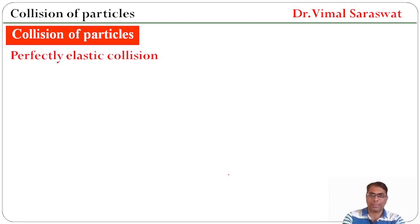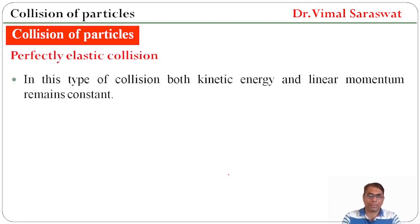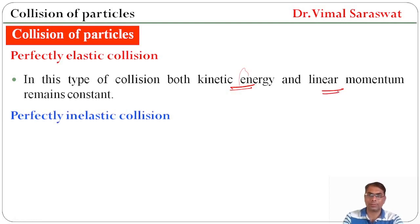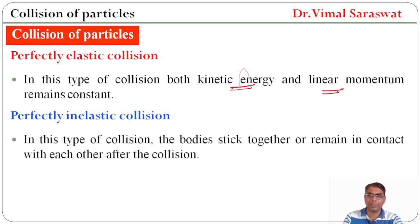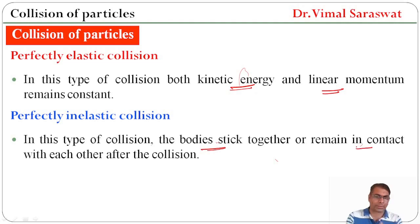First type is perfectly elastic collision. In this type of collision, both kinetic energy and linear momentum remain constant. The second type of collision is perfectly inelastic collision. In this type of collision, the bodies stick together or remain in contact with each other after the collision. Kinetic energy does not remain constant, whereas linear momentum remains constant.